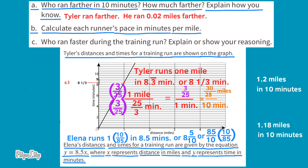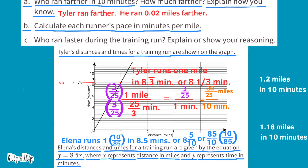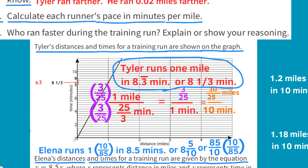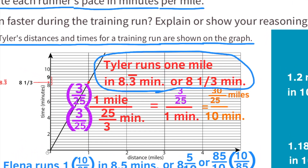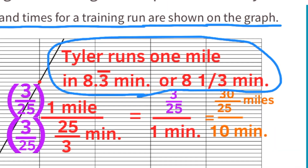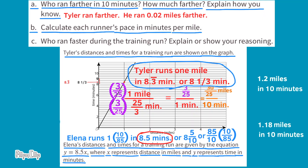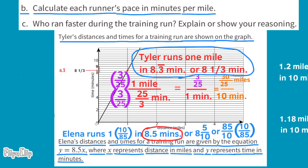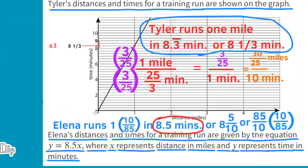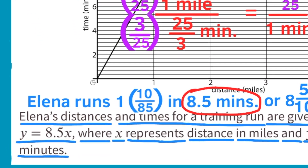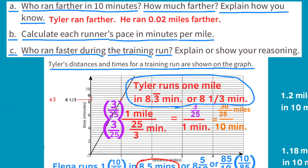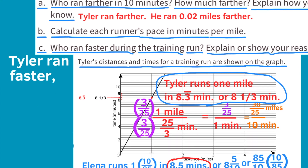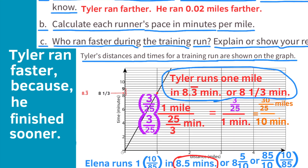Part B: Calculate each runner's pace in minutes per mile. We already found this: Tyler runs 1 mile in 8 and one-third minutes, or 8 minutes 20 seconds; Elena runs 1 mile in 8.5 minutes, or 8 minutes 30 seconds. Part C: Who ran faster during the training run? Tyler ran faster, because he finished each mile sooner.